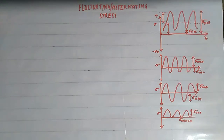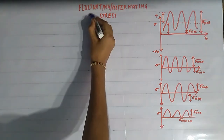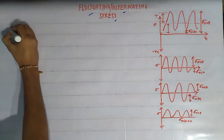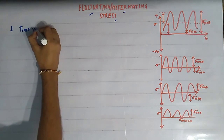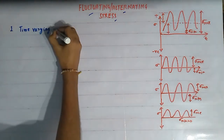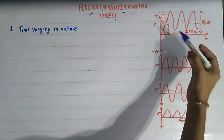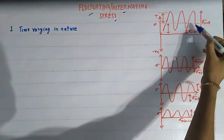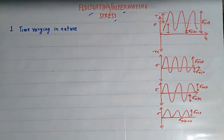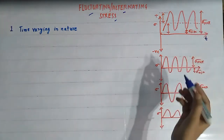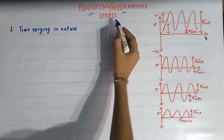Welcome to my YouTube channel. Today we are going to discuss fluctuating or alternating stresses. The first thing to know about fluctuating stress is that they are time-varying in nature — the magnitude of these stresses varies with time, or their direction may also vary with time. This is evident from the graphs which all denote fluctuating stresses.